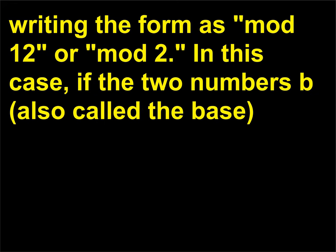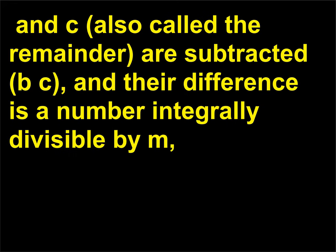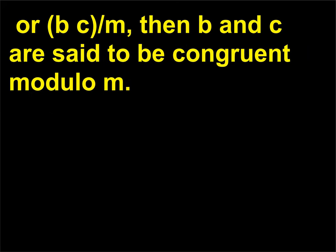In this case, if the two numbers b, also called the base, and c, also called the remainder, are subtracted — b minus c — and their difference is a number integrally divisible by m, or b minus c divided by m, then b and c are said to be congruent modulo m.